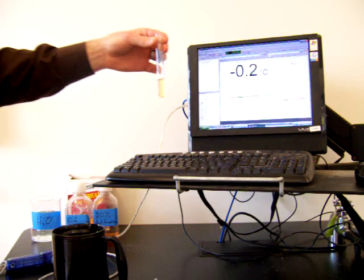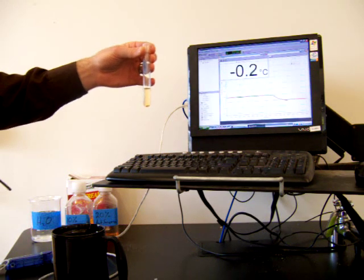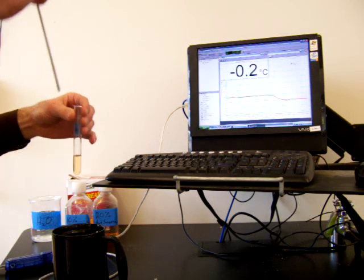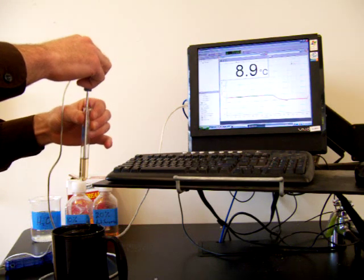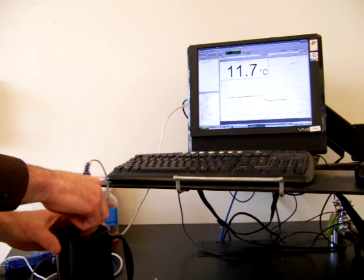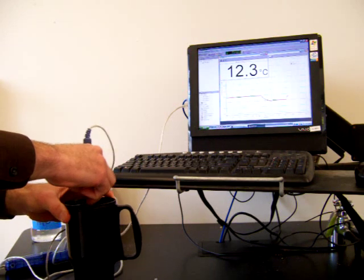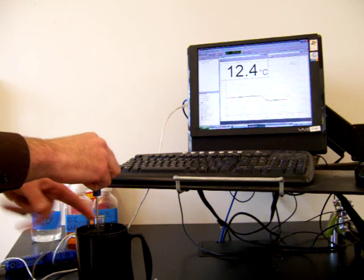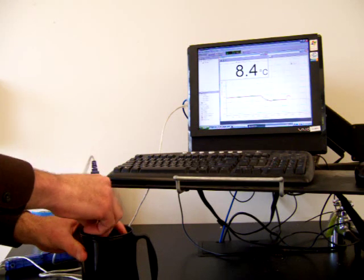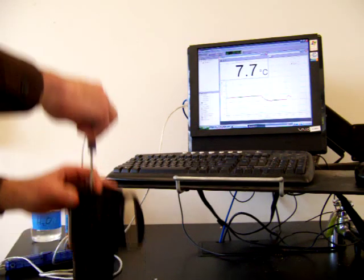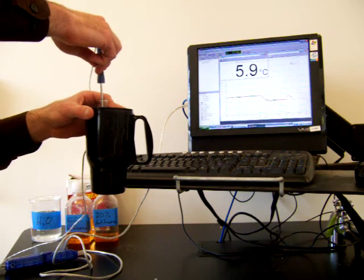So now I'm going to take my 10% antifreeze solution. This was made by dissolving 10 grams of antifreeze in 90 grams of water. And I'll put this one into the ice pack. And we're going to see at what temperature this one freezes.